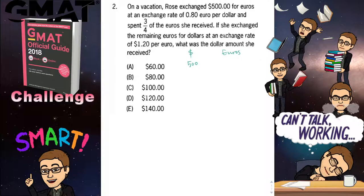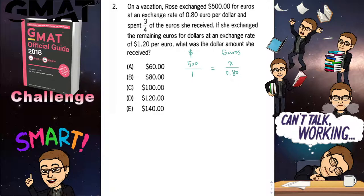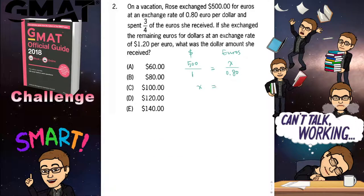It's going to correspond to a euro amount that we're going to calculate, so I set that as x. The other relationship says 0.80 euros per dollar, so on the dollar side I put 1, and on the euro side I put 0.8. Now I have this proportion — that's how exchange rates work. Cross multiplication is probably the easiest way. So x equals 500 times 0.8.